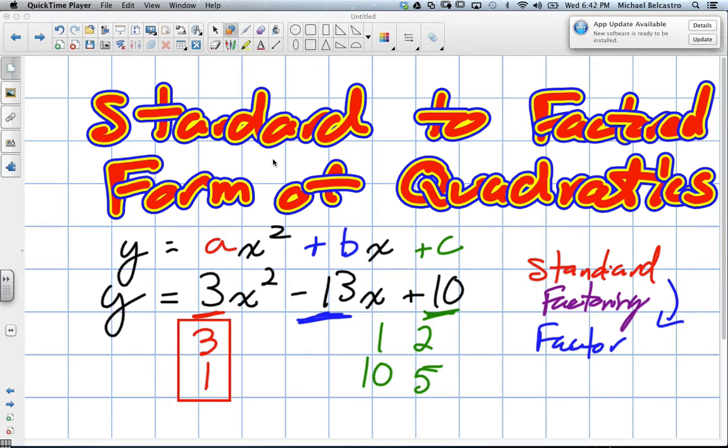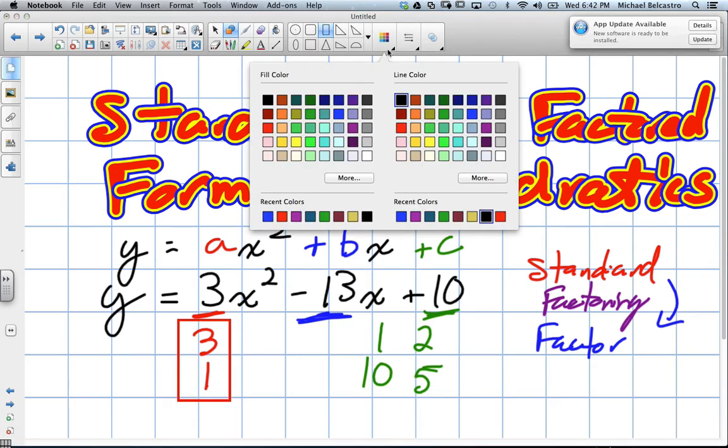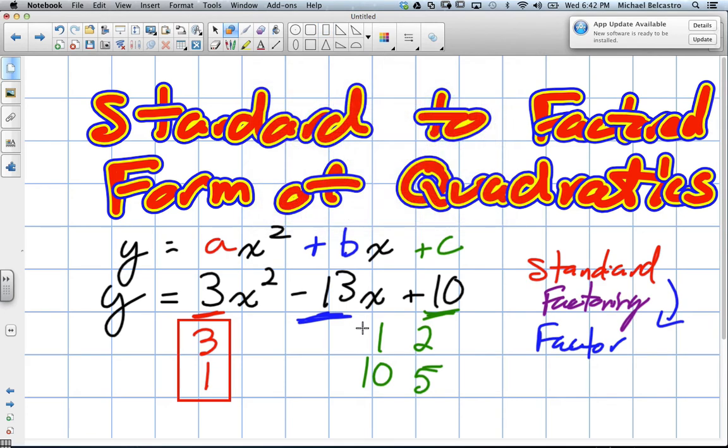So we're going to set them up in columns. I'll put a red column around this one and I'll just put some green columns over here so we can only be multiplying by numbers we use to multiply to 10. We need them to be products that add up to our middle term, which is negative 13.